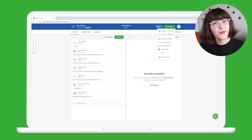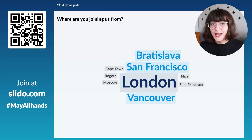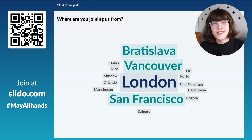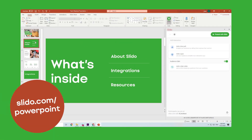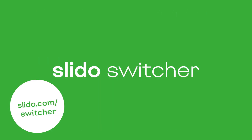Display the poll results and Q&A in Slido present mode. People are twice as likely to engage with Slido if present mode is displayed and when the speaker is commenting on the results. If you have a slide deck prepared, there's a way to seamlessly integrate Slido into it — just use our PowerPoint or Google Slides integration, or Slido switcher for any other presentation software.